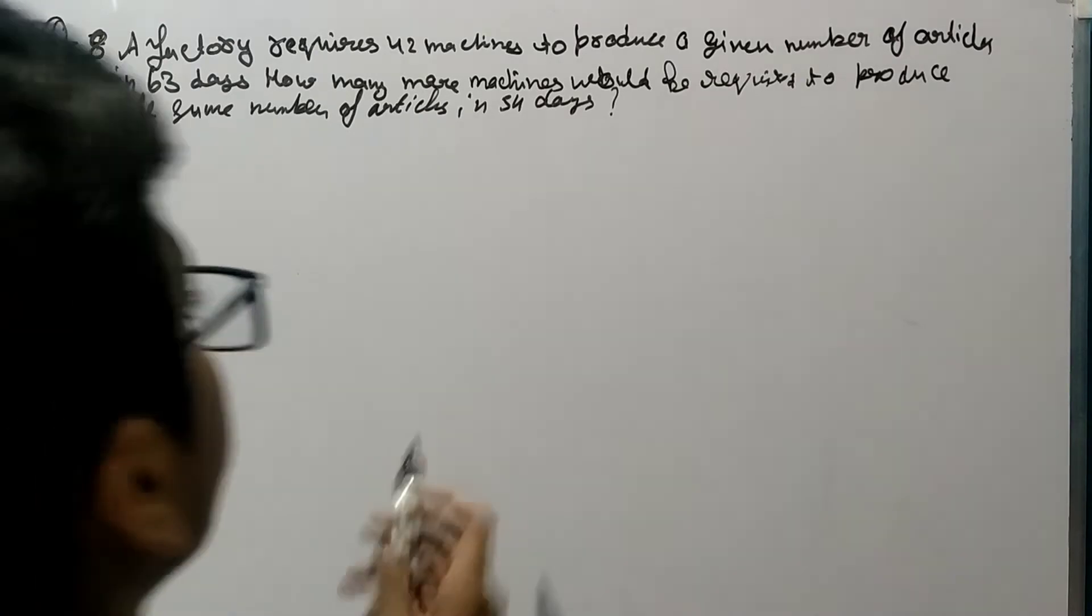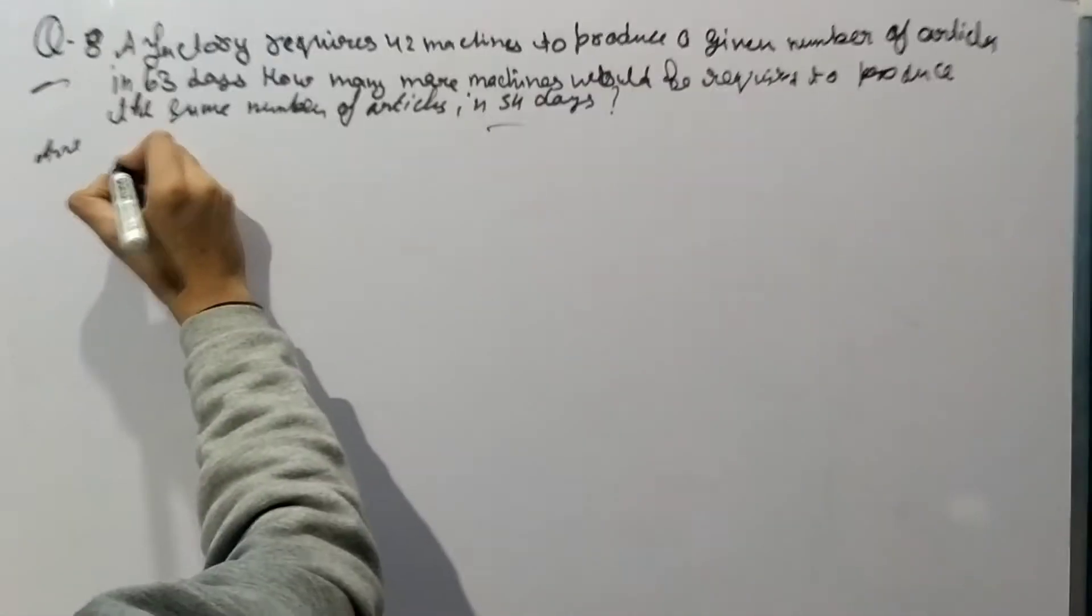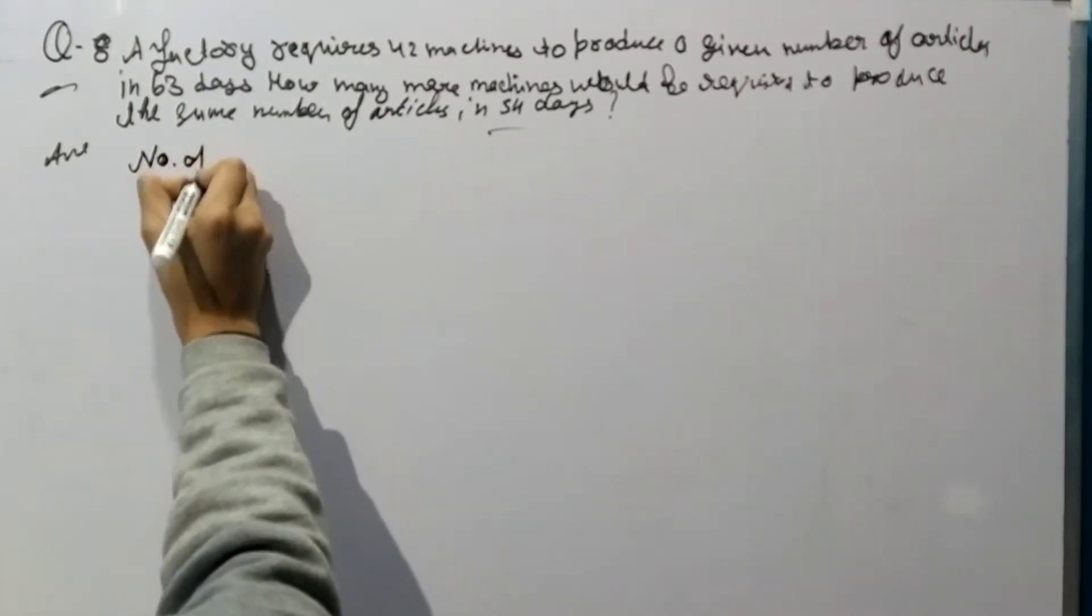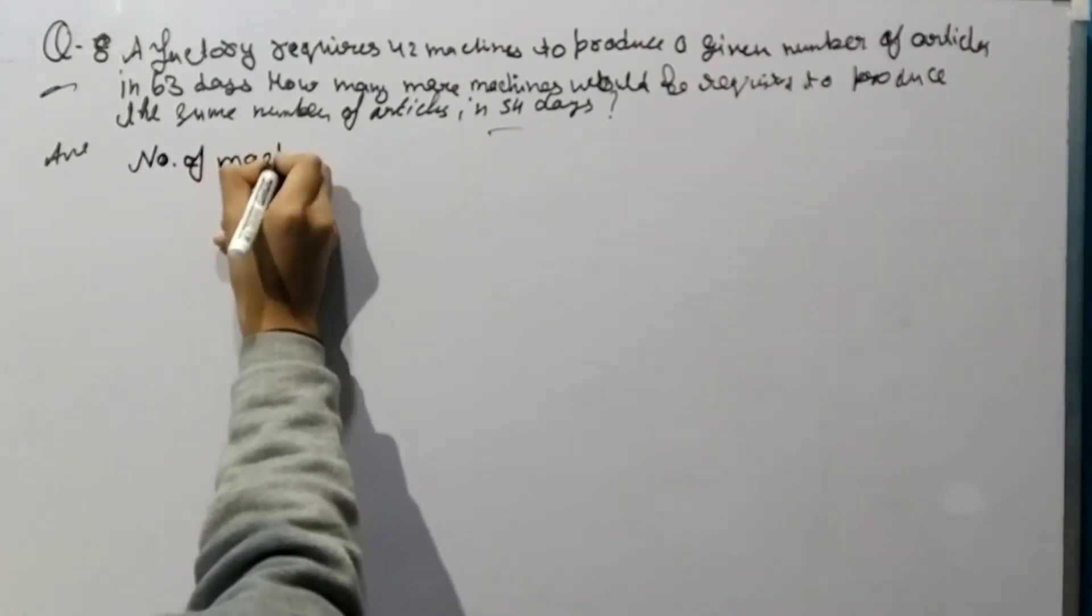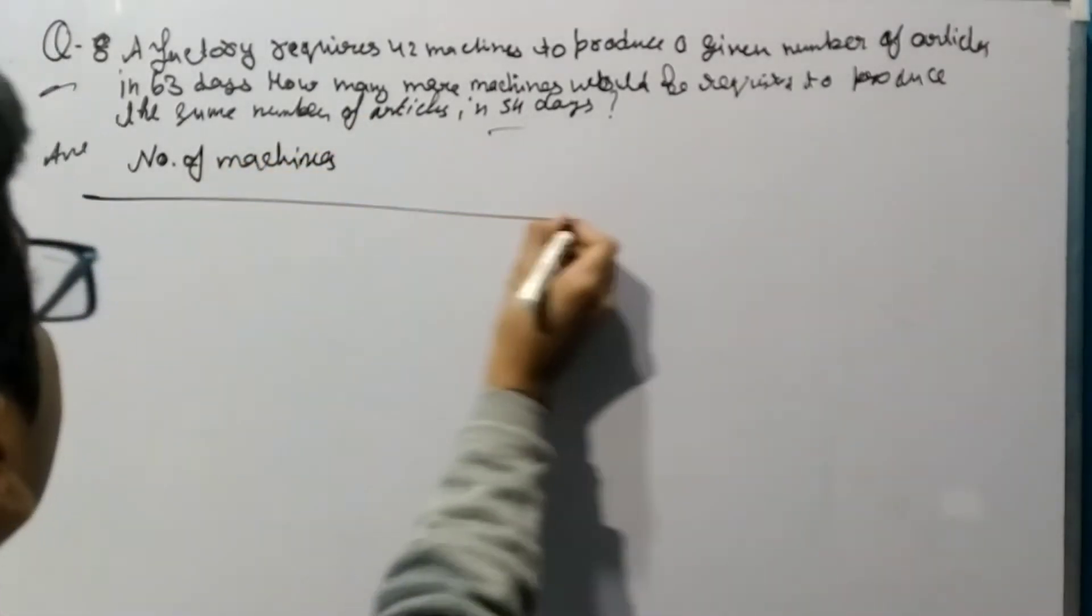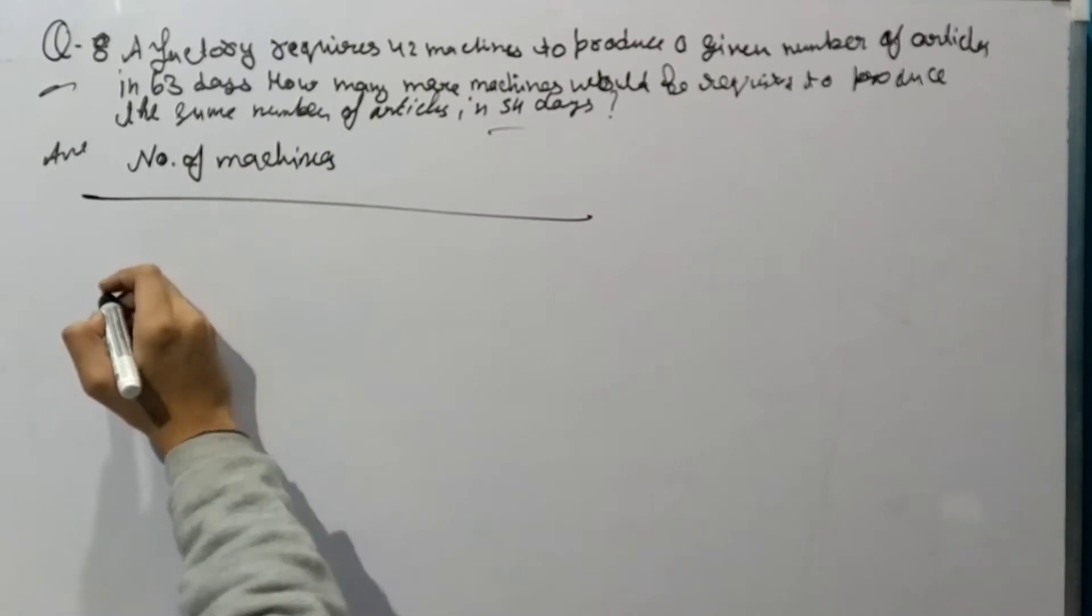Okay, so let's make the table first. Our table will be number of machines, then days.